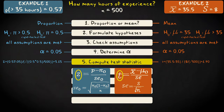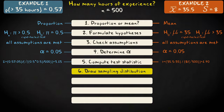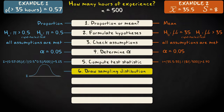Step 6: Draw the relevant sampling distribution and show the null hypothesis value and the test statistic, supplemented with the rejection region and the corresponding critical value. In the case of a proportion, the critical value for a right-tailed test with alpha 0.05 from the z-table is 1.64. In the case of our mean, we look up the critical value in the t-table: that's 1.66.